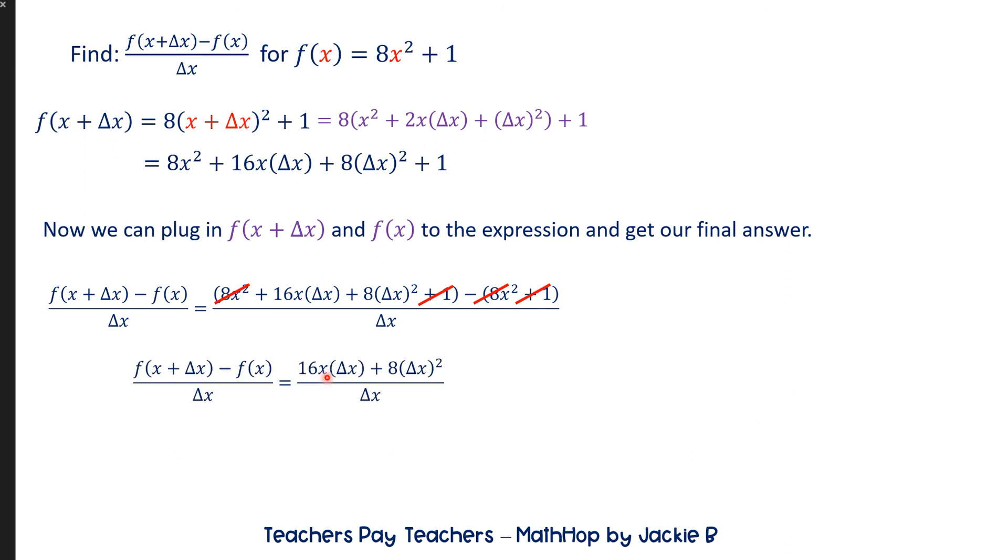We still have 16x times delta x plus 8 times delta x squared all over delta x. So I can divide out my delta x's because they are in every term. So delta x will no longer be in the denominator. I'm going to divide it with one of those and one of those.